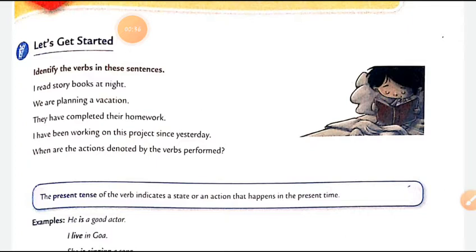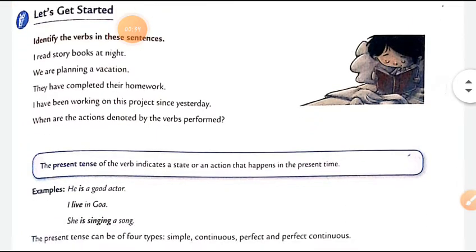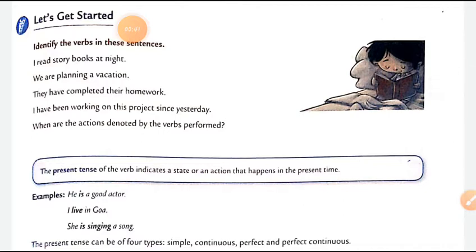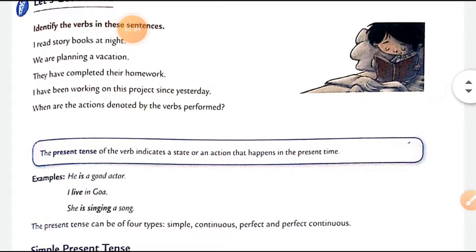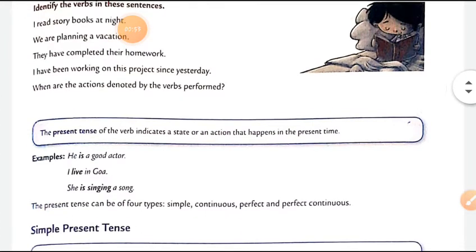Do you know what 'present' means? Present ka matlab — currently, recently, jo aapke paas philhaal hai, yani jo aapka hai abhi — wo hota hai aapka present. The present tense of the verb indicates a state or an action that happens in the present times. Yeh us action ko indicate karta hai jo present times mein hua hai.